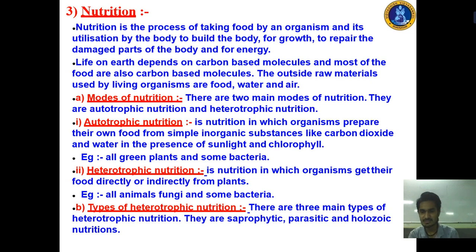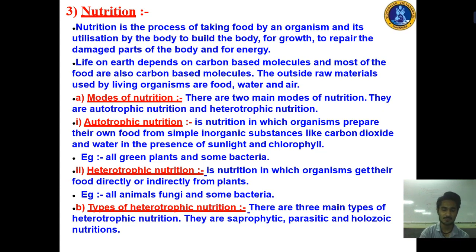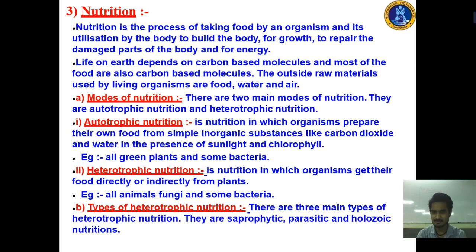After that we discussed nutrition and the modes of nutrition. There are two types of nutrition modes. First is autotrophic nutrition and second is heterotrophic nutrition. In autotrophic nutrition, the organism produces its own food. In heterotrophic nutrition, organisms get their food directly or indirectly from autotrophic plants or some bacteria.